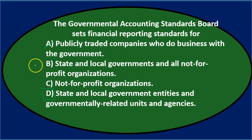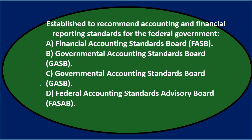Also, if B were right, you'd think C would be correct too, so those two can eliminate each other even without full knowledge of the answer. Final answer: D — the Governmental Accounting Standards Board sets financial reporting standards for state and local government entities and governmentally-related units and agencies.